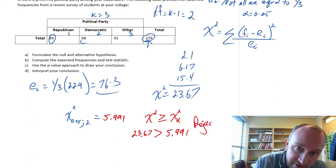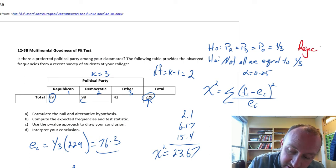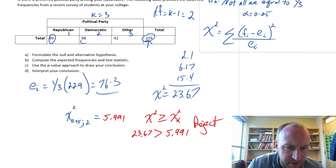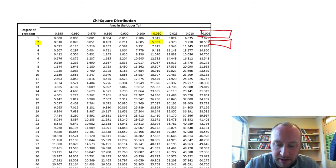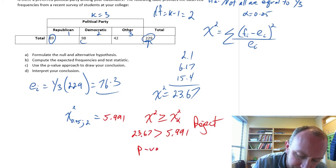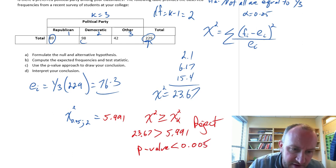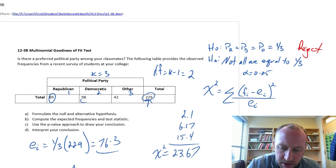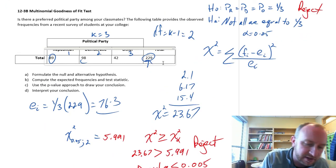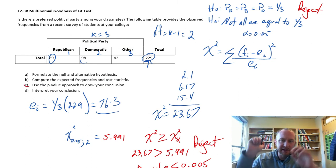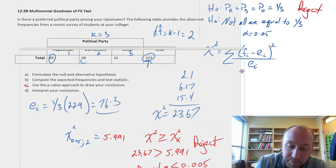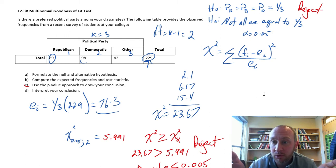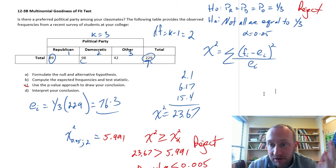So we have fairly strong evidence here to reject that null hypothesis. Using the p-value approach, a test statistic of 23.67 is way off the charts, so our p-value is going to be something smaller than 0.005. We have pretty strong evidence using both the critical value and p-value approach, reaching the same conclusion: those proportions are not all equal to one-third. There is clearly some difference in preferences among students in terms of which political party they vote for.